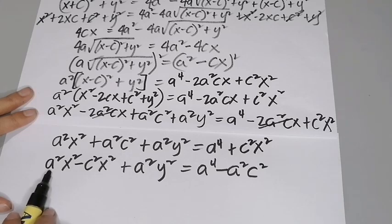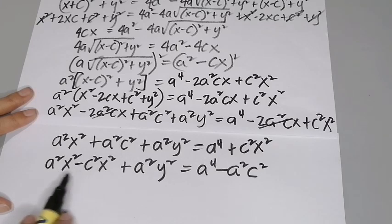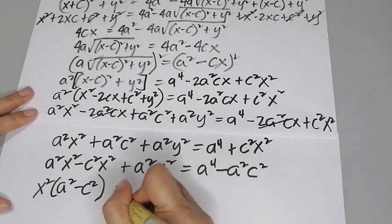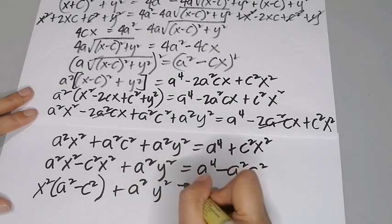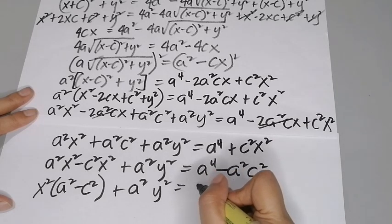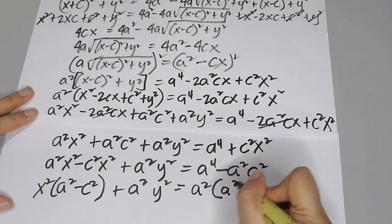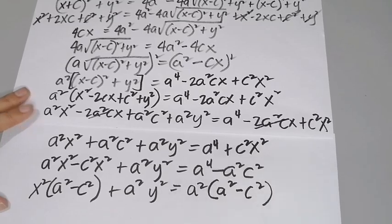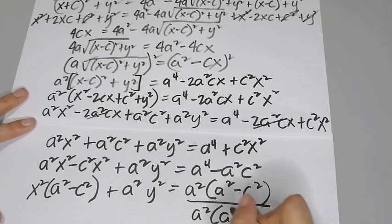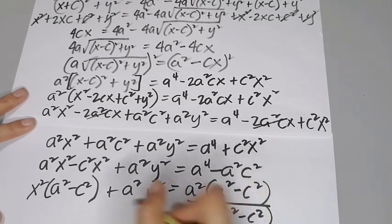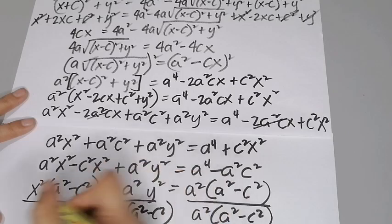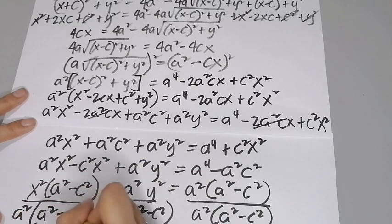Factoring the left side, we group a²x² − c²x² and factor out x², giving x²(a² − c²) + a²y². On the right side, we factor out a², giving a²(a² − c²). Then we divide everything by a²(a² − c²).